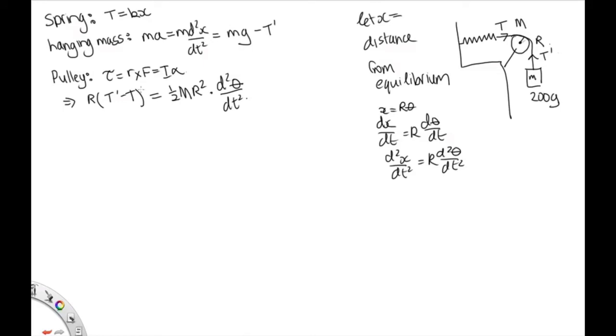So we can rearrange this. We can replace this with 1 over r d squared x dt squared. And now this r squared and this r are all going to cancel out. So we have T dash minus T is equal to a half capital M d squared x dt squared.